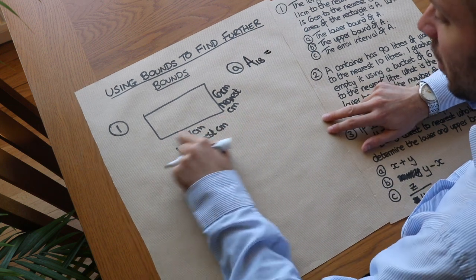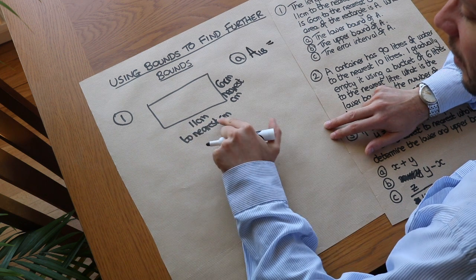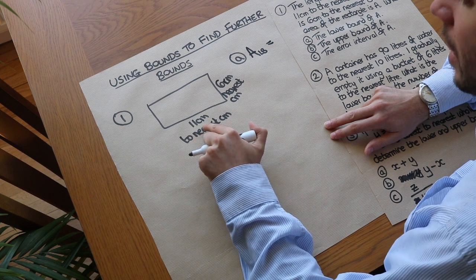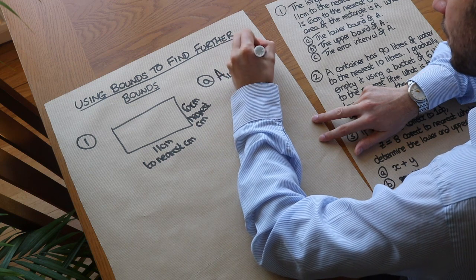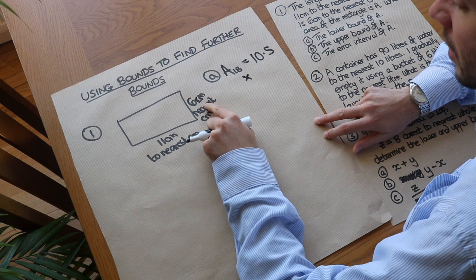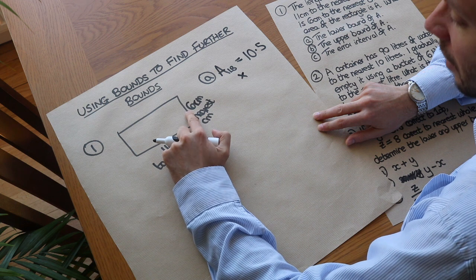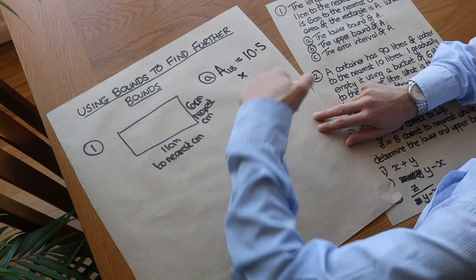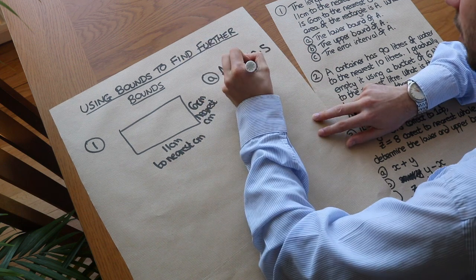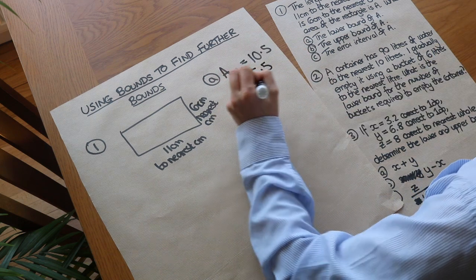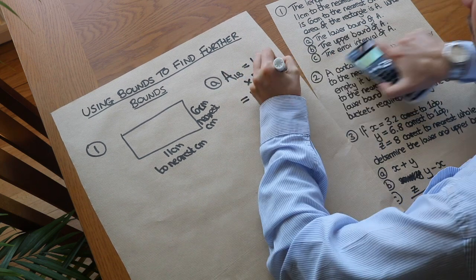We use the smallest possible value of the length, i.e. the lower bound of the length. If something was 11 centimetres correct to the nearest centimetre, the smallest value it could have been was 10.5. So it's 10.5, then we times that by the smallest the width could have been, which is 5.5 centimetres — since 5.4 would round to 5, not 6. Multiplying those together gives 57.75 centimetres squared.